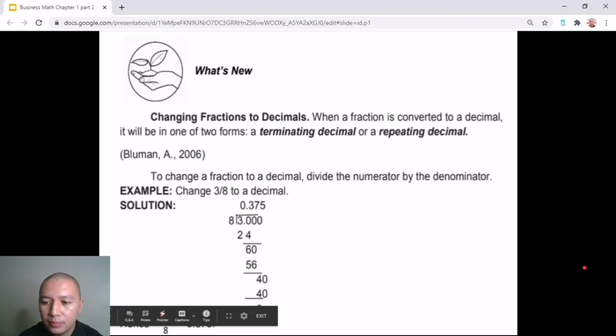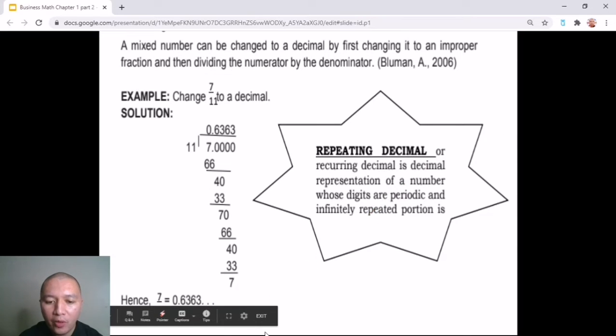For the second one, we have an example of a repeating decimal. A mixed number can be changed to decimal by first changing it to an improper fraction. So later on, we will be showing you how to convert a mixed number to a decimal. Now for this example, the answer is a repeating decimal because if you would divide 7 by 11, you will get an answer of 0.636363 and that's up to infinity.